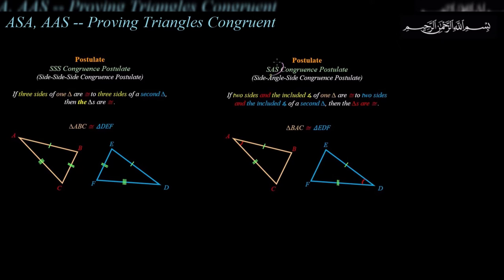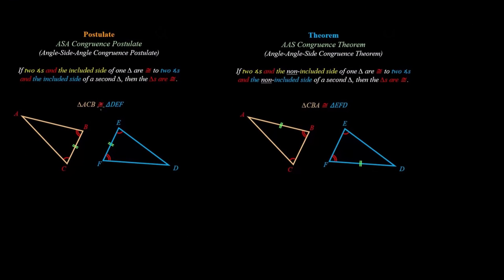Then we talked about side-angle-side: if two sides and the included angle — the angle between those two sides — of one triangle are congruent to two sides and the included angle of a second triangle, then the triangles are congruent. To these we shall add two additional ways of proving triangles congruent: angle-side-angle congruence and angle-angle-side congruence. I'll explain these first, then we'll do examples.